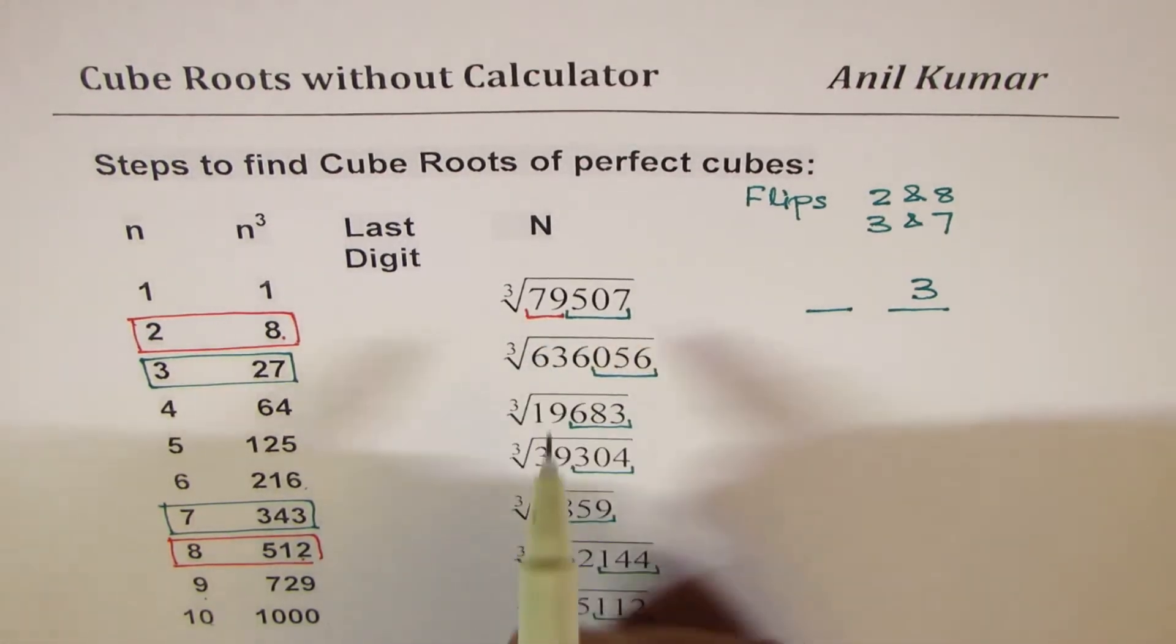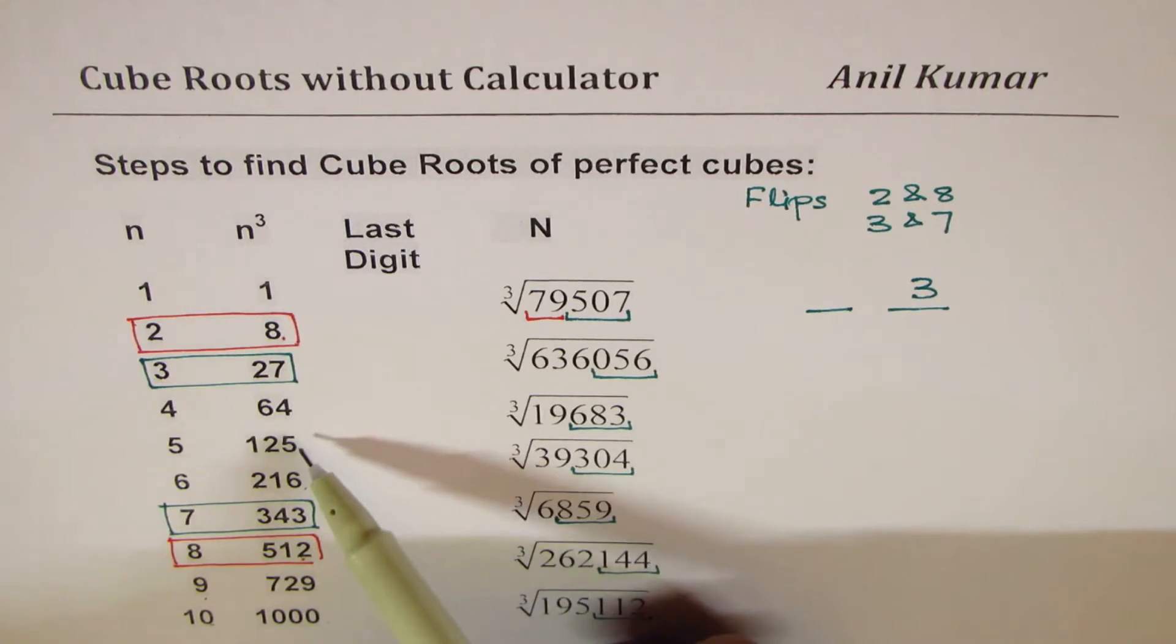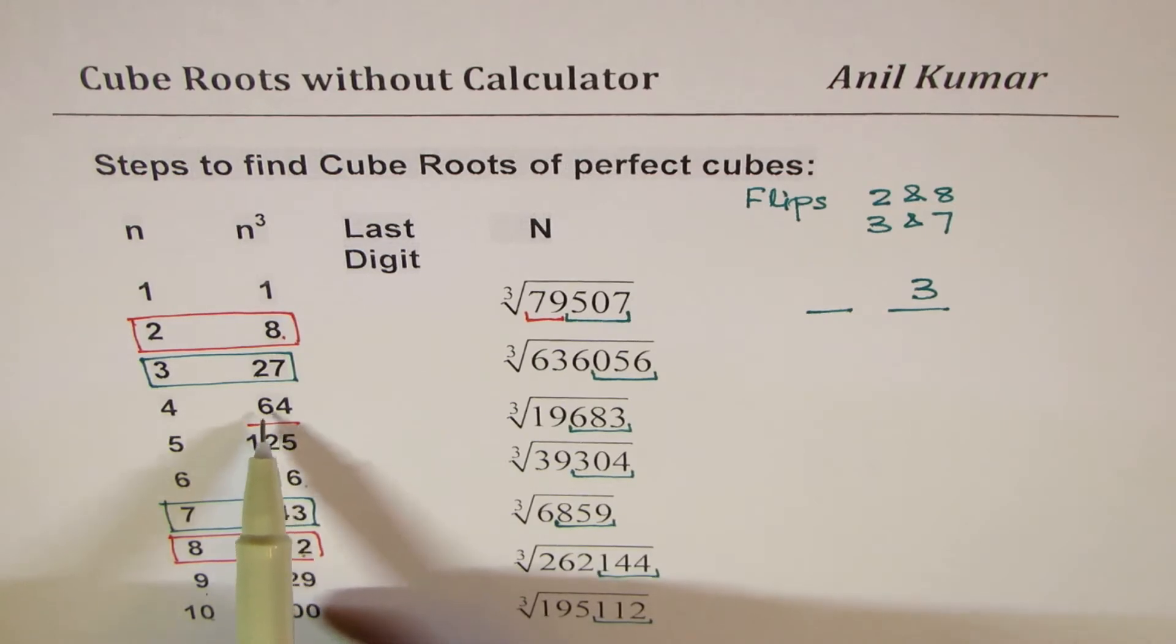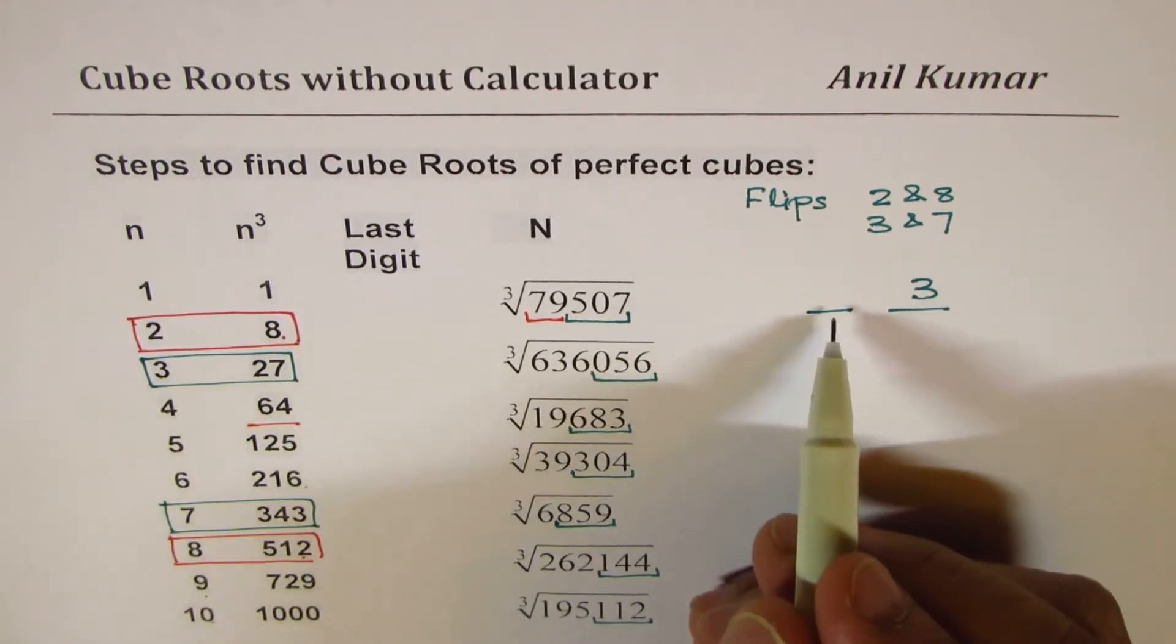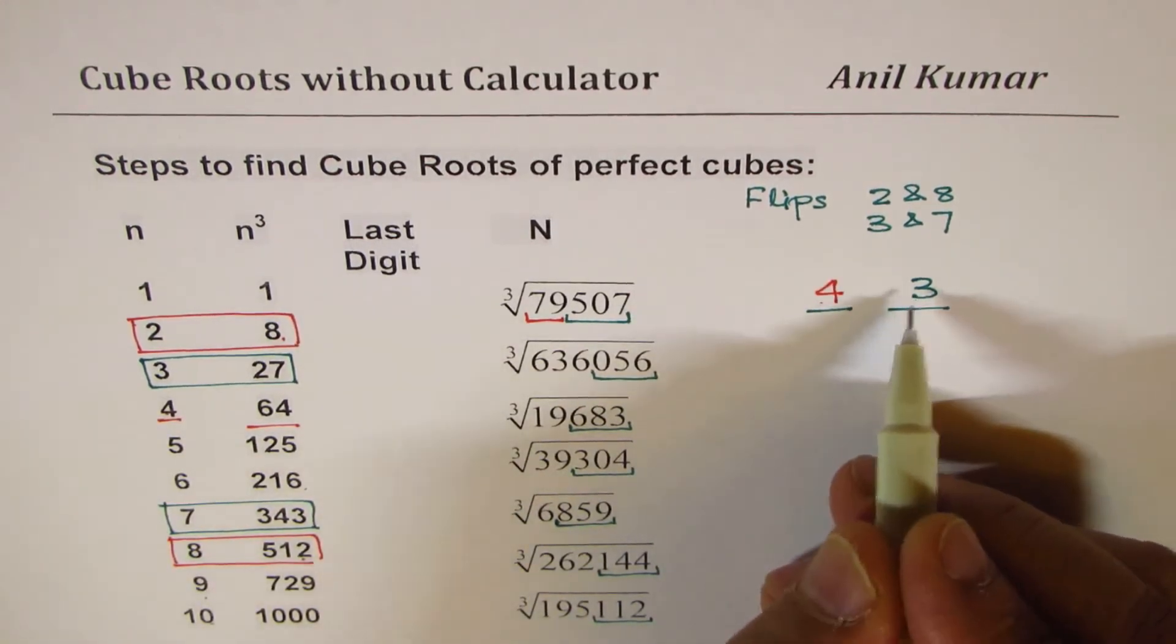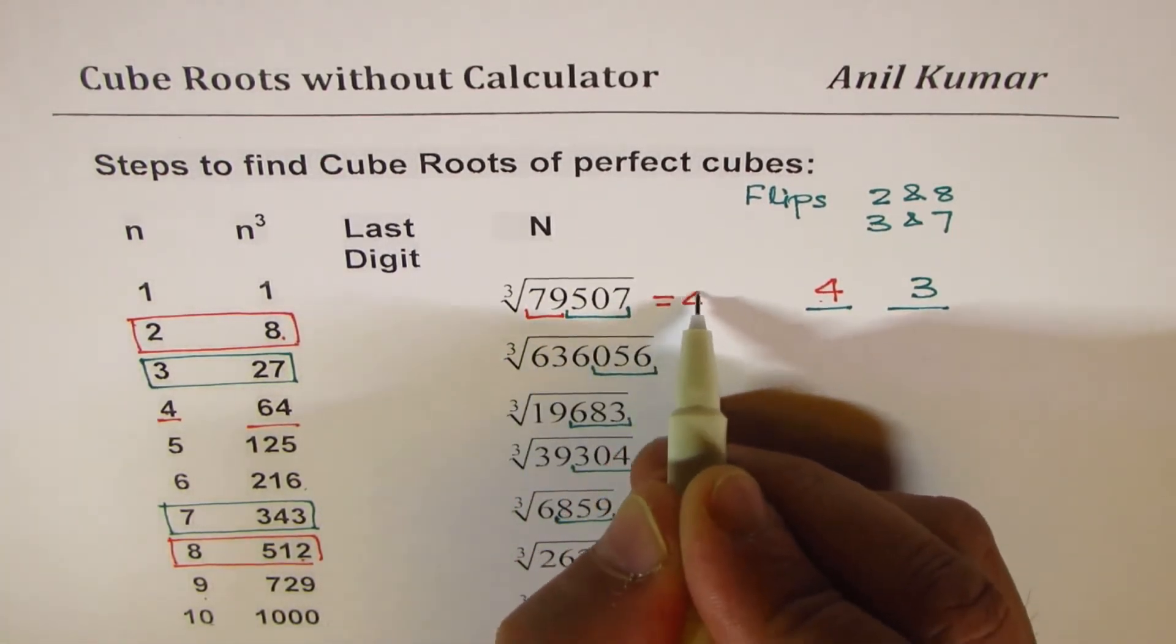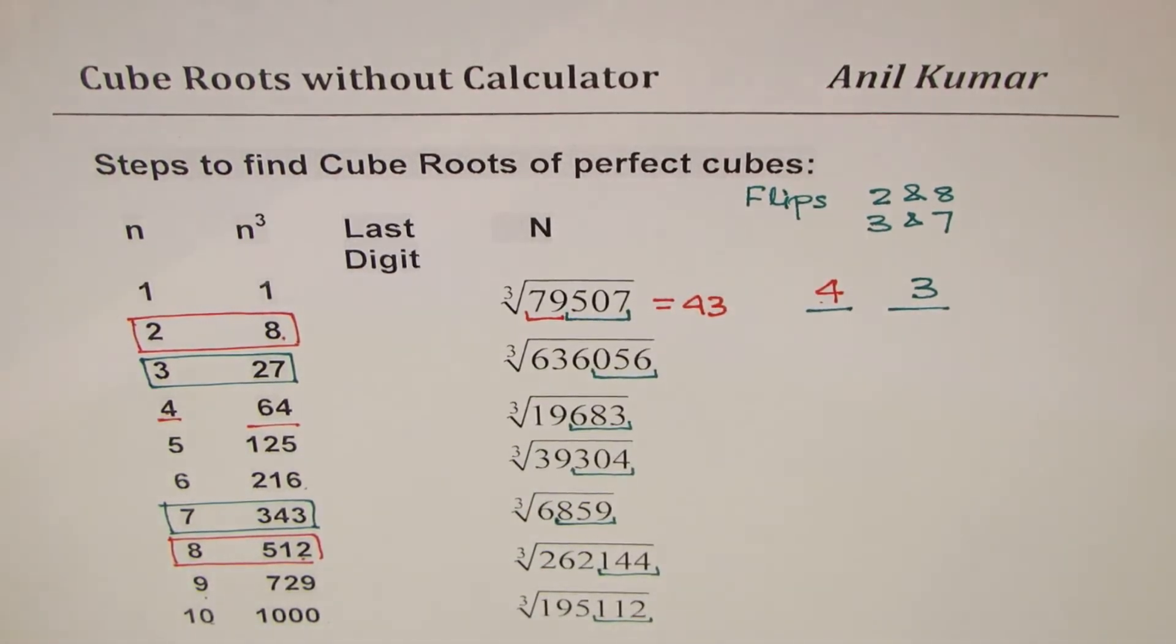Second step is we have to see the other group. The other group now in this case is 79. Now go through the cube list. What comes up to 79? It is 64 which is 4 cubed. So the number here is 4. So 43 cubed is 79507. So the answer for this is indeed 43. I hope you got the process.